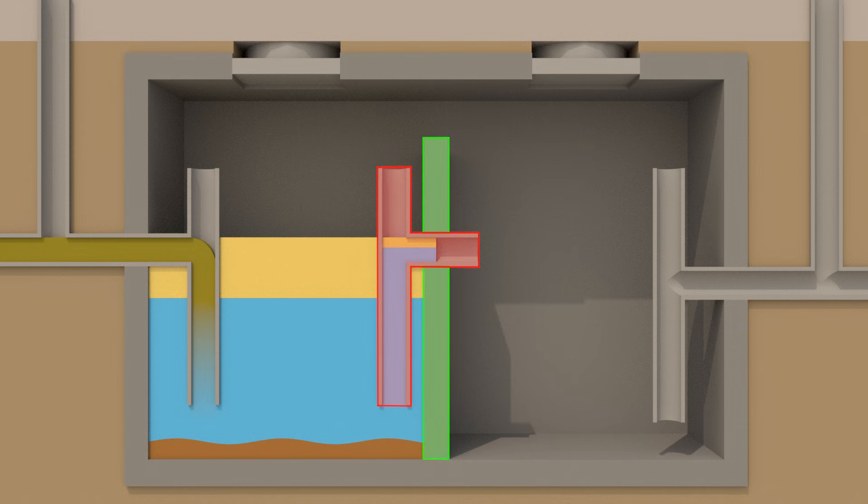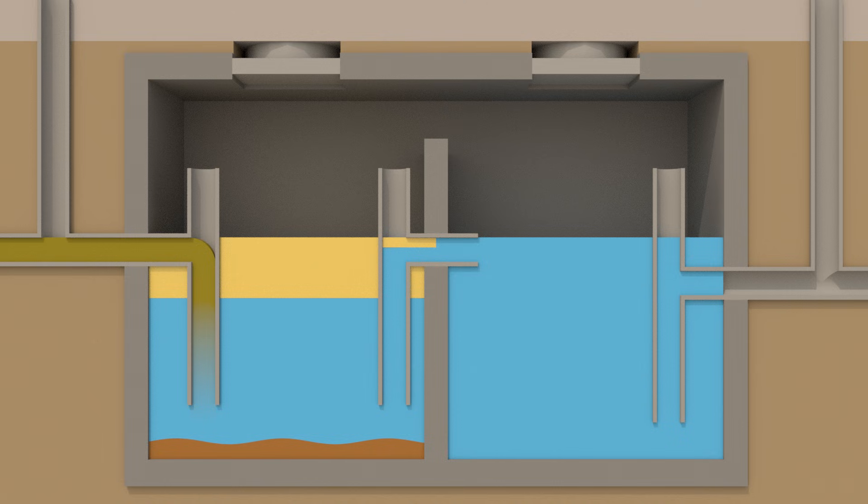Thanks to the baffle wall and transfer T, most of the FOG will be contained within the first chamber. As water fills up the second chamber, further separation of any remaining FOG will occur.